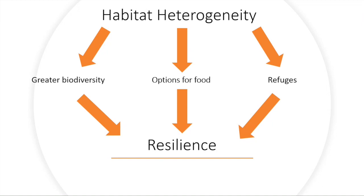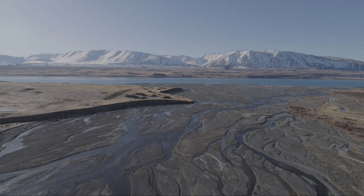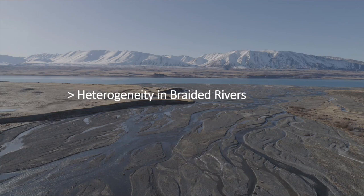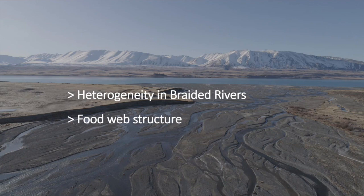Today I'm mainly going to be focusing on the options for food that this habitat provides. I'm going to be talking about heterogeneity in braided rivers — in particular the Cass, where I work, because all the data I collected from there — how this relates to food web structure, and how food web structure links to resilience of food webs and ecosystems.